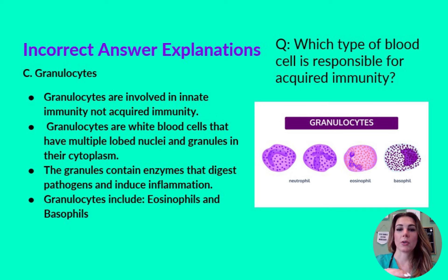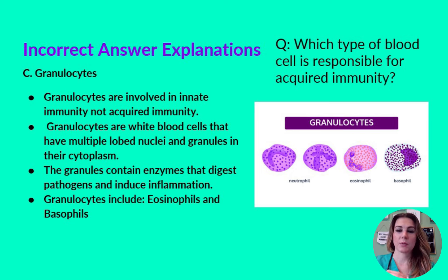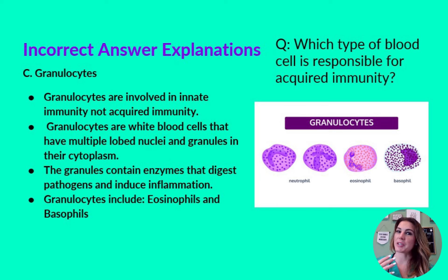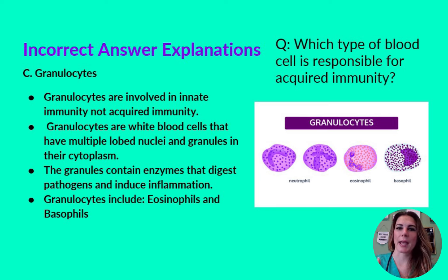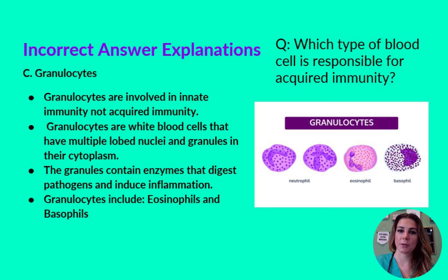Granulocytes are also called polymorphonucleocytes. They include eosinophils and basophils. Eosinophils protect your body against parasites and function in allergic reactions — if you have an allergy, you've probably heard the term eosinophil before. Basophils function in allergy and inflammation.